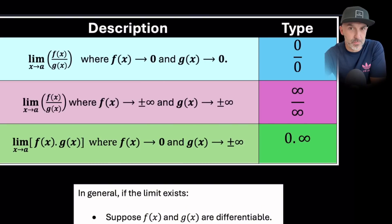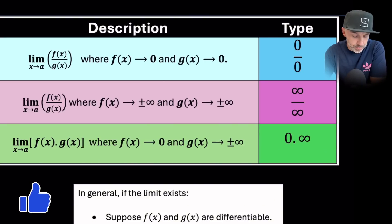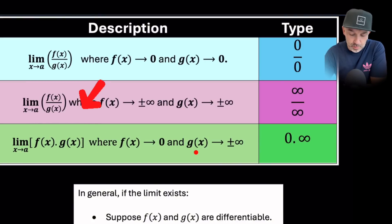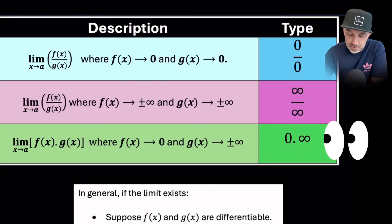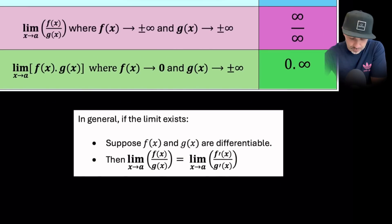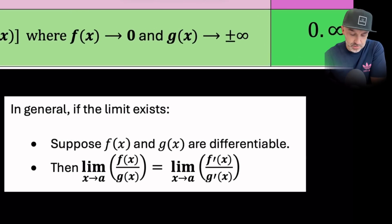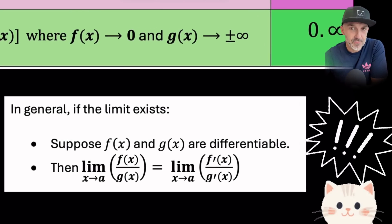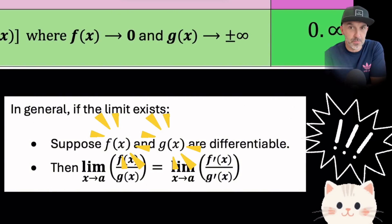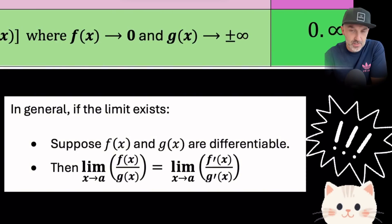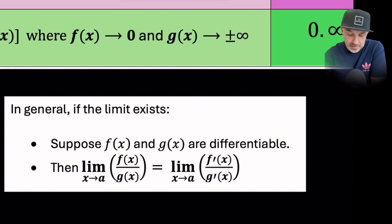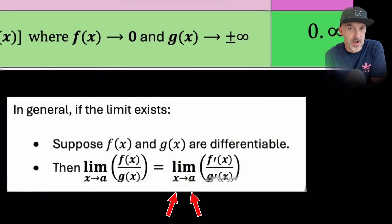In those cases we can use L'Hôpital's rule. A third scenario is when we have the product of two functions where one tends to 0 and the other tends to ±∞, giving us 0 times ∞. The key conditions are that f(x) and g(x) must be differentiable, and L'Hôpital states that the limit of f(x)/g(x) equals the limit of f′(x)/g′(x) as x tends to the same value.